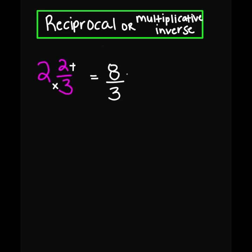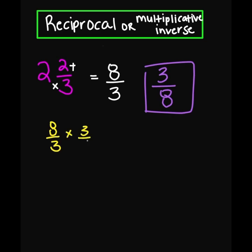The reciprocal of 8 over 3 is going to be 3 over 8, and this is your answer. If you want to check your work, you're going to do 8 over 3 times 3 over 8. Remember that your number times the reciprocal has to equal 1. So 8 times 3 in the numerator is 24, and 3 times 8 in the denominator is also 24. So 24 divided by 24 is 1, which confirms that 3 over 8 is the correct answer.